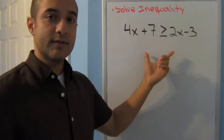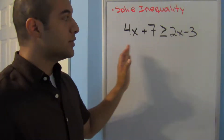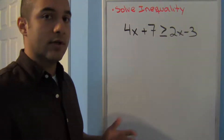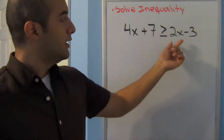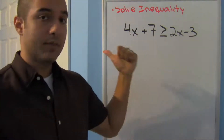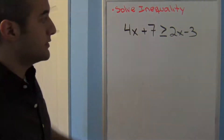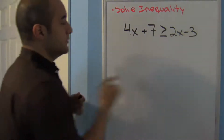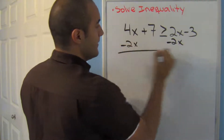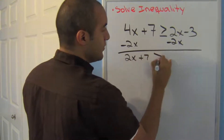When your inequality starts to look a little bit crazy, the first thing you want to do is get the x on the same side, usually on the left. I notice that I have a 2x and a 4x that works on the right — I'm going to move it to the left. Since it's a positive 2x, I'll subtract 2x on both sides.